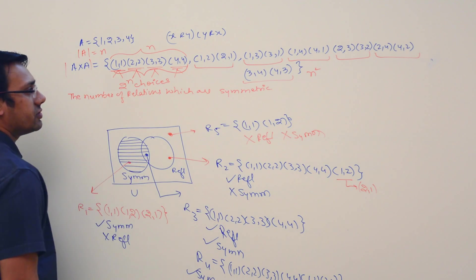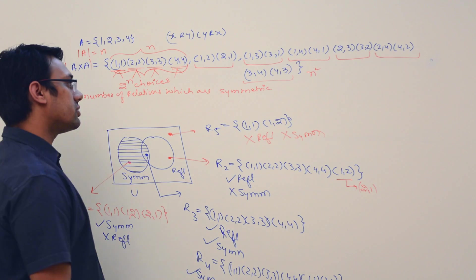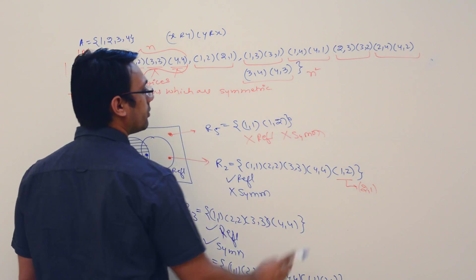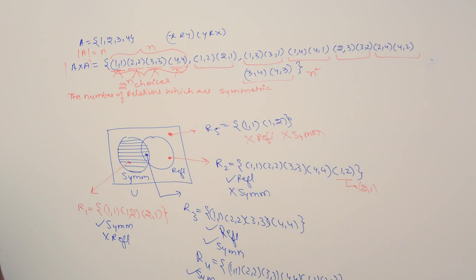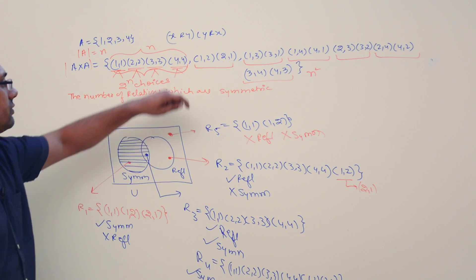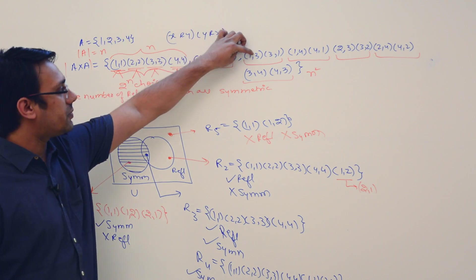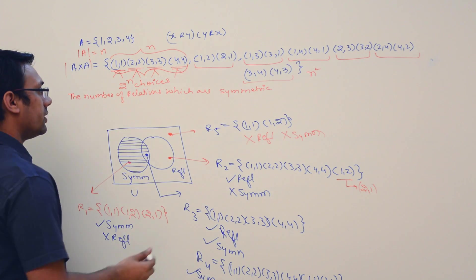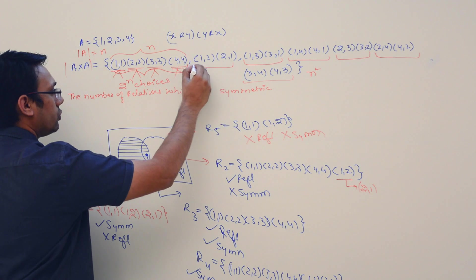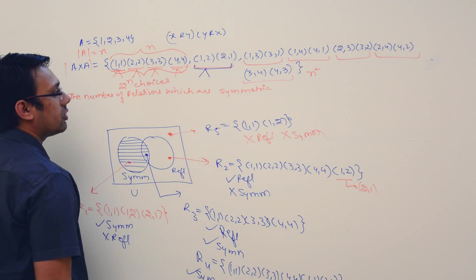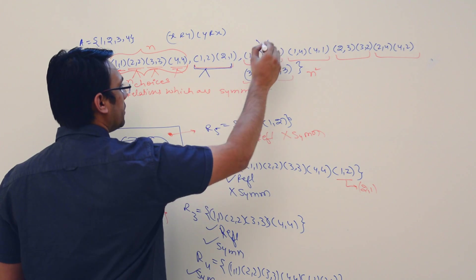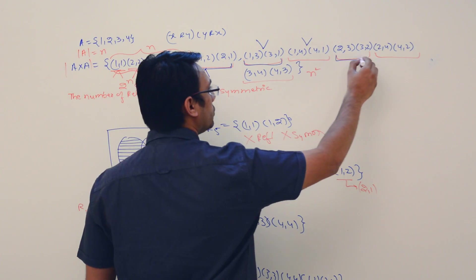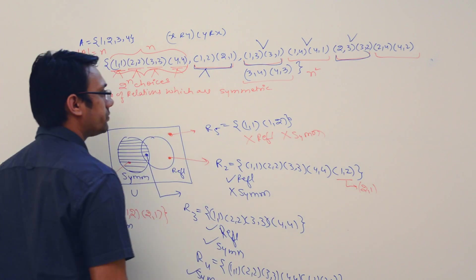If (1,3) is there then (3,1) must also be there; if (1,4) is there then (4,1) must also be there. We don't have an independent choice — if we include one element of the pair, the other must follow. But for each such pair as a whole, we have two choices: either include this complete pair or not.